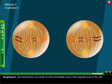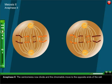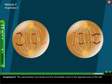Anaphase two: The centromeres now divide and the chromatids move to the opposite ends of the cell.